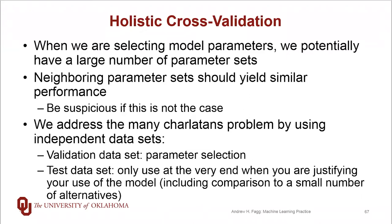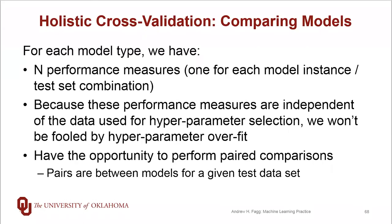This issue of many charlatans comes up very much in this situation, and we're addressing it by separating what we do with our validation set versus what we do with our testing set. The validation set should be used only for parameter selection, and the test data set you should only ever look at at the very end of the whole process. After hyperparameter selection and moving to comparison across models, for each model type we have n performance measures.